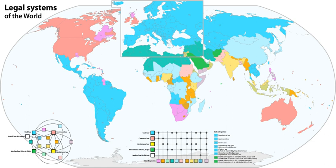Virginia Code § 1-200 establishes the continued existence and vitality of common law principles and provides that 'the common law of England, insofar as it is not repugnant to the principles of the Bill of Rights and Constitution of this Commonwealth, shall continue in full force within the same, and be the rule of decision, except as altered by the General Assembly.' By contrast to statutory codification of common law, some statutes displace common law — for example, to create a new cause of action that did not exist in the common law, or to legislatively overrule the common law.